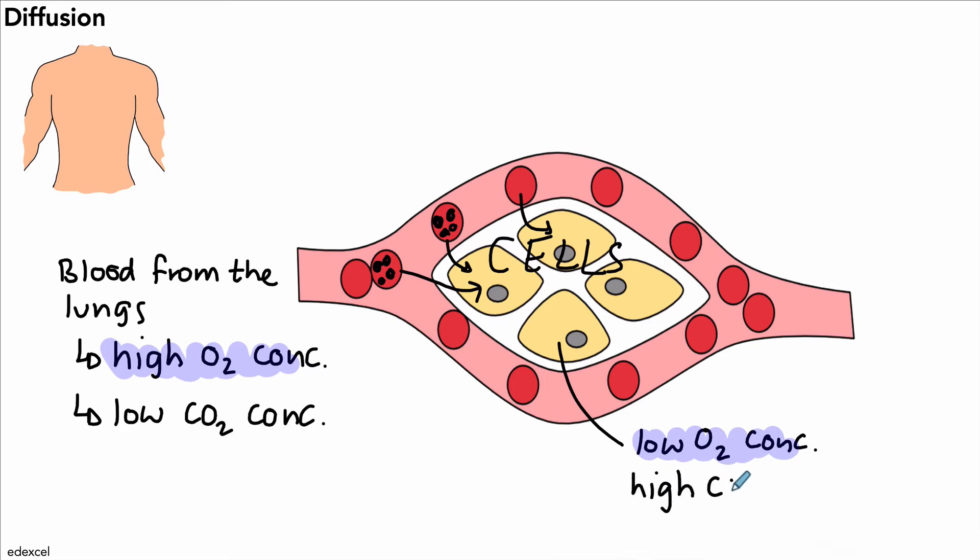The cells also produce carbon dioxide from respiration, so they have a high concentration of carbon dioxide compared to the blood. Therefore, carbon dioxide will diffuse outwards into the blood plasma. Two examples of diffusion in living things - remember, these are a result of respiration. Oxygen is used up and carbon dioxide is produced in respiration.